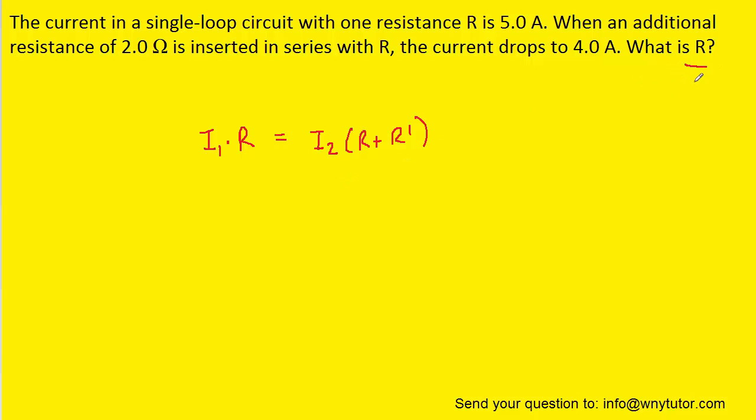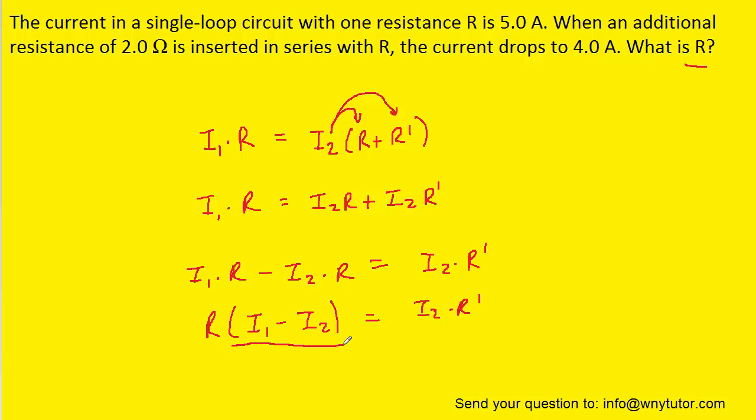Now, our goal is to solve for R, so perhaps the first thing we need to do is distribute I2. We could then subtract this term over to the left-hand side. We could then factor out a common factor of R. And then finally, we can divide both sides of the equation by the term in parentheses.